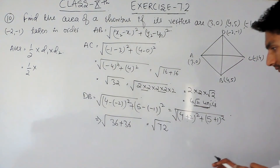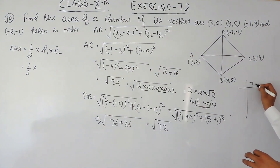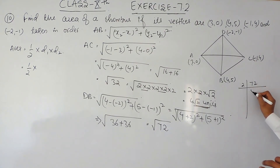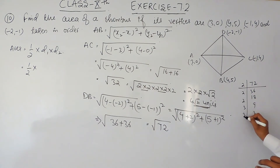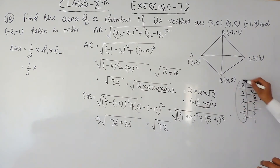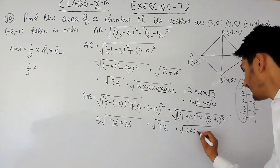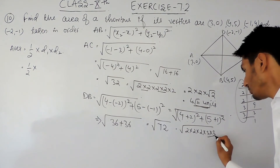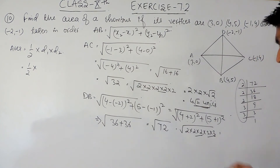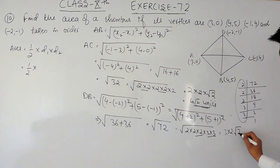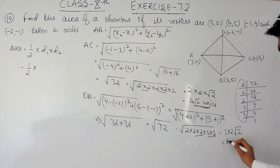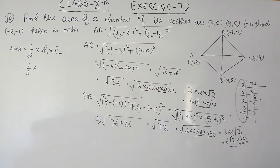Now to simplify the square root of 72, we factorize it. 72 can be written as 2 multiplied by 2 multiplied by 2 multiplied by 3 multiplied by 3. We can make pairs: one pair of 2s and one pair of 3s, taking 2 and 3 out, leaving root 2 inside. So 3 times 2 gives us 6 root 2 units. The length of our second diagonal DB is 6 root 2 units.